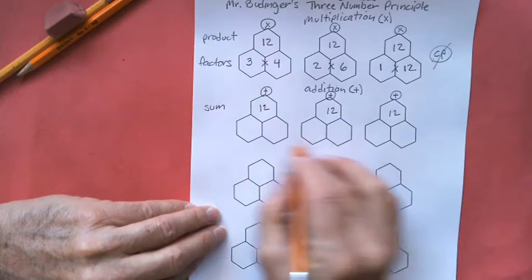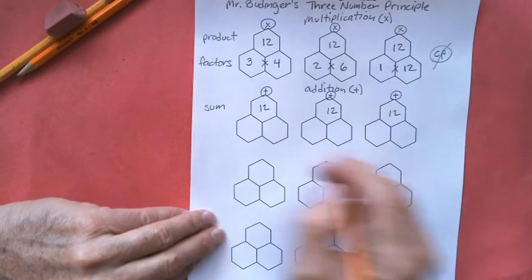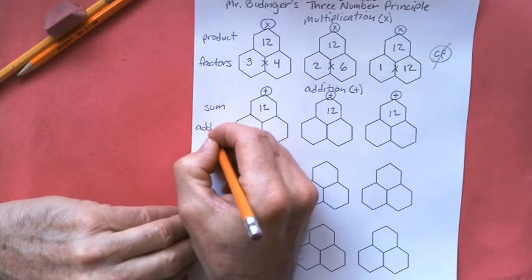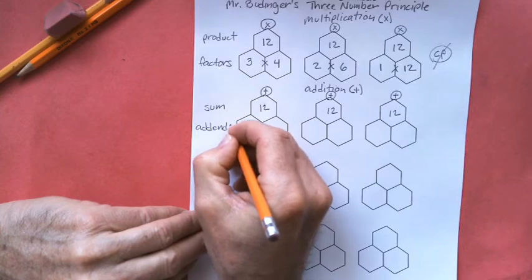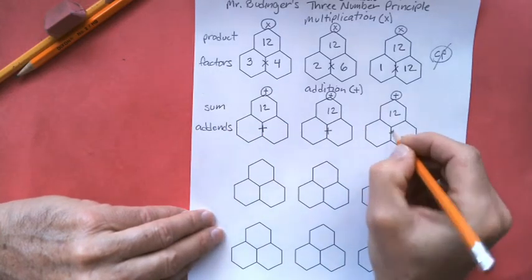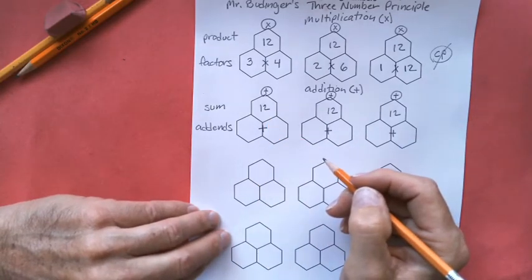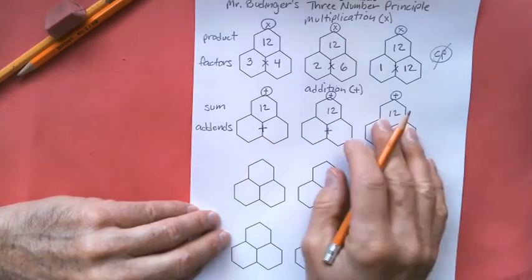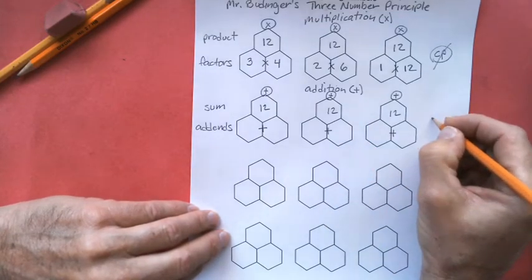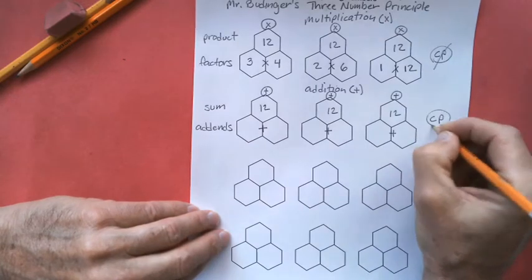And what do we call these numbers down here that we add together? Sometimes the name kind of implies what they are. We call these the addends. So here we're going to be adding these two numbers together to get 12. Remember, we can't use the same numbers twice. We can't reverse the same numbers. So no commutative property on this either.